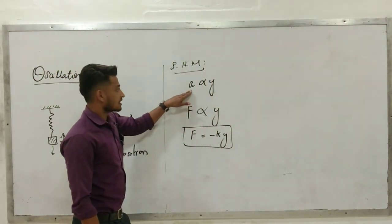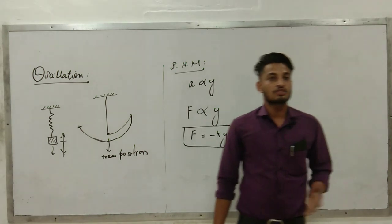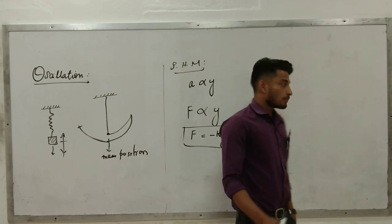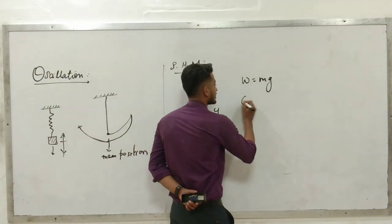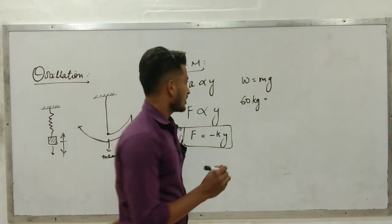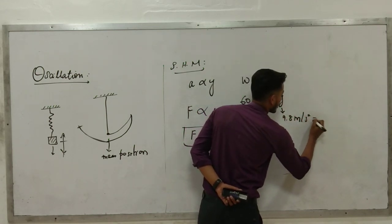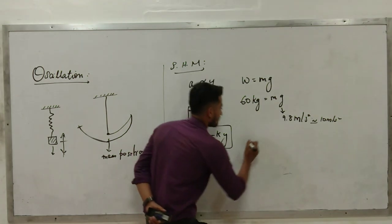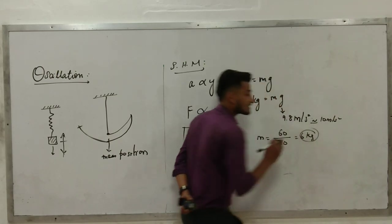If we apply force, F equals M times acceleration. M is equal to mass. For example, if a person's weight is 60 kg, then W equals M times G, where G is approximately 9.8 meters per second squared, which we take as 10 meters per second squared. So M equals 60 divided by 10, which equals 6 kg.